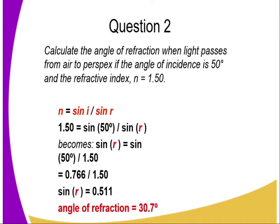Let's get to question 2. Calculate the angle of refraction when light passes from air to perspex if the angle of incidence is 50 degrees. The refractive index is provided to be 1.5.